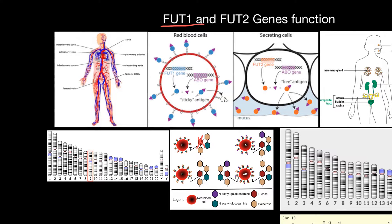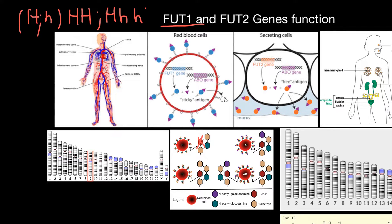The FUT1 gene can be one of two variants: dominant, which we call the H allele, and recessive. Two alleles can produce three genotypes: HH (homozygous dominant), Hh (heterozygous), and hh (homozygous recessive). If someone has two recessive alleles (hh)...